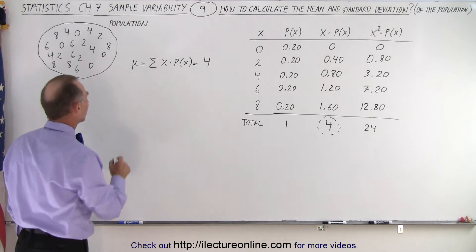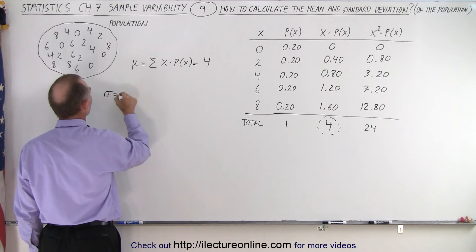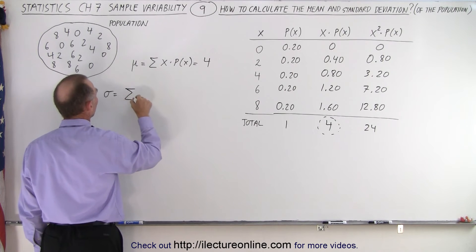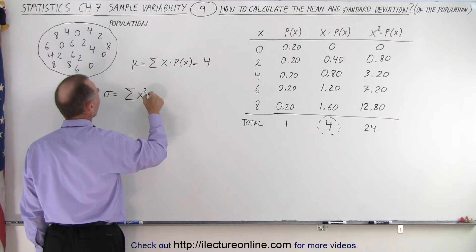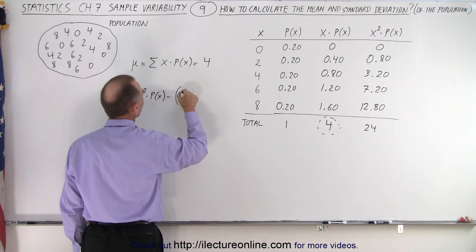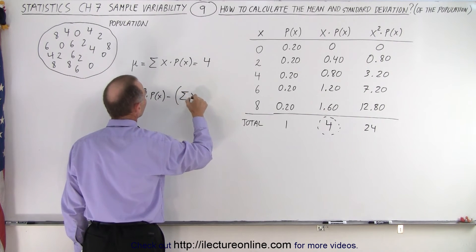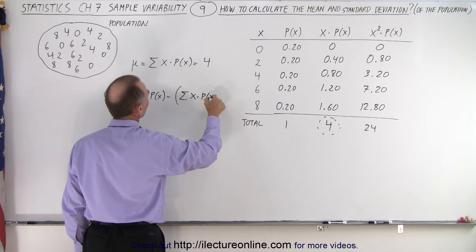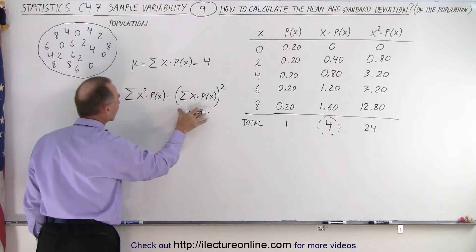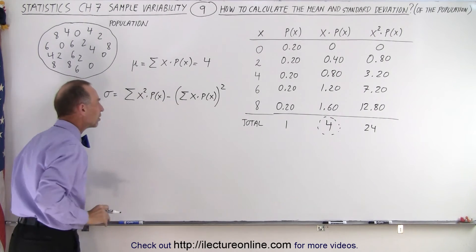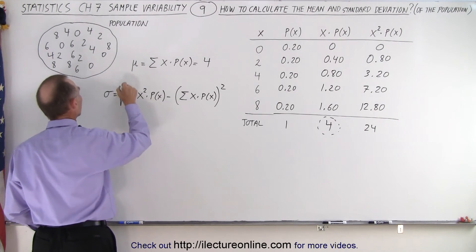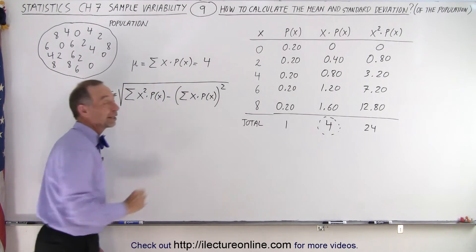What about the standard deviation? The standard deviation is equal to the sum of x squared times the probability of x minus the sum of x times the probability of x quantity squared. All right. Well, not quite yet. We need to take the square root of that. Now we're ready to go.